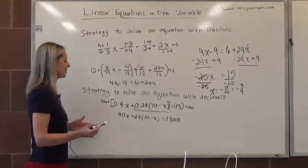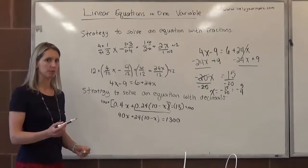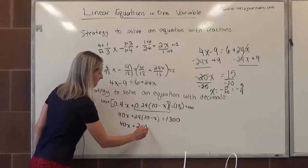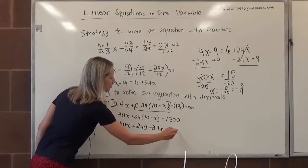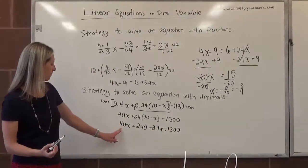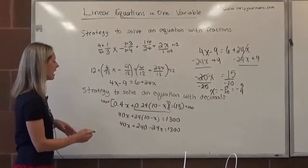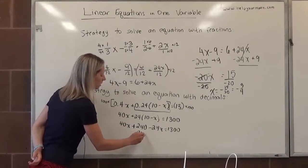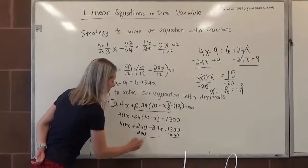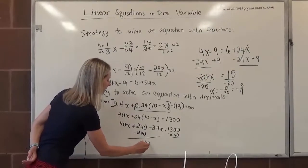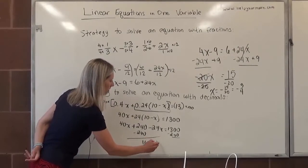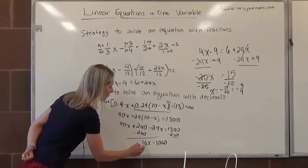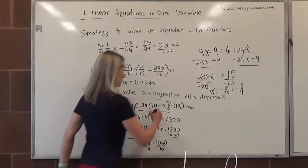We could solve this equation as usual. First, we'll distribute: 40x plus 240 minus 24x equals 1,300. We can combine like terms, so I have 40x and negative 24x on the same side. At the same time, I'm going to subtract 240 from both sides. 40x minus 24x is 16x equals 1,060, and then we'll divide both sides by 16. The 16s will cancel.